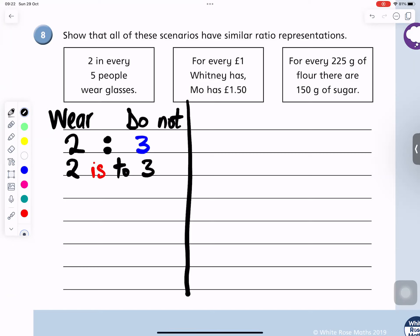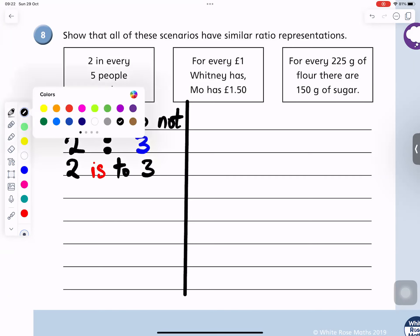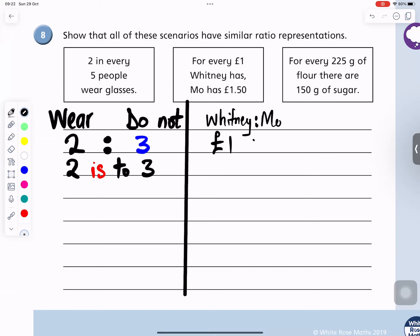Now let's go to the next one. The next one says for every one pound Whitney has, Mo has one pound fifty. So what we do is, the way I do it, I'll put Whitney on the left and Mo on the right. I'm going to put the two dot. So for one pound the other person has one pound fifty.